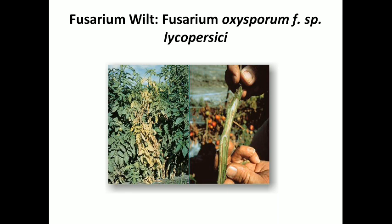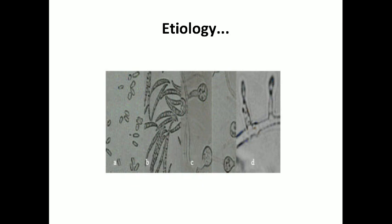The next disease is Fusarium wilt, which is caused by fungi Fusarium oxysporum f. sp. lycopersici. Leaves show yellowing symptoms, and an important symptom is drooping and wilting. If you cut the infected tissue, you will see browning of the vascular system. The mycelium is septate and hyaline.